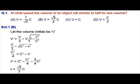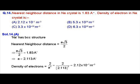So the velocity of this object equals √3/2 c. MCQ question number 14: In this question the nearest neighbor distance in sodium crystal is given to us as 1.83 angstroms.